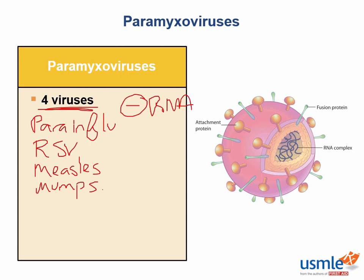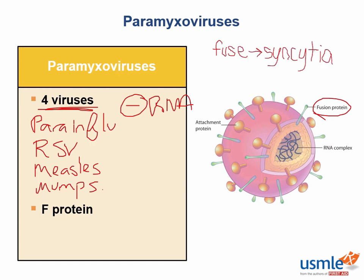Before discussing each individually, there are a few important concepts shared by all paramyxoviruses. All of these viruses contain a surface F or fusion protein. This is a key infectious protein that not only assists in infection, but causes infected respiratory epithelial cells to fuse and form multinucleated cells called syncytia.